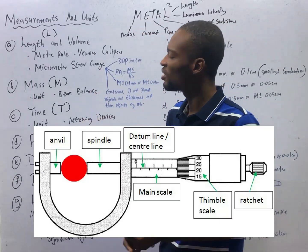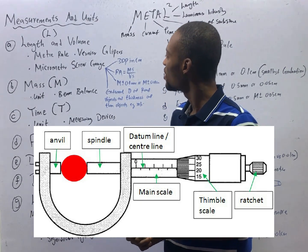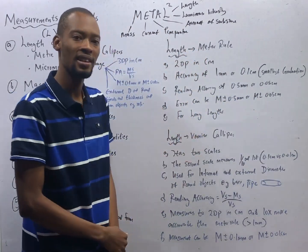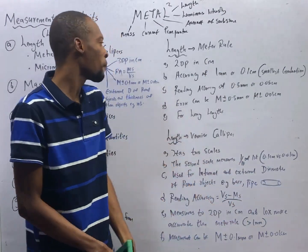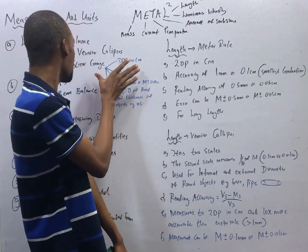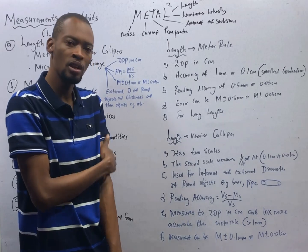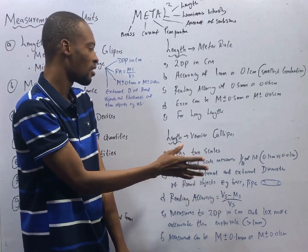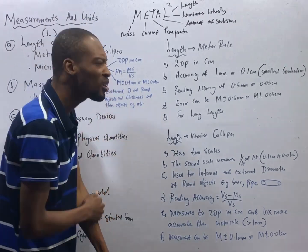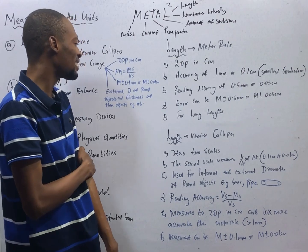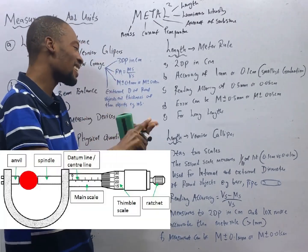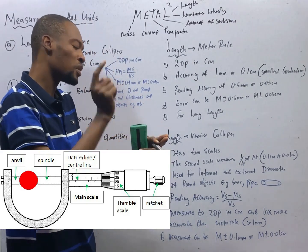The micrometer screw gauge is also an instrument used for measuring length. It measures to three decimal places in centimeter — this is what differentiates it from the meter rule and the vernier caliper, which both measure to two decimal places. The reading accuracy of the micrometer screw gauge uses the main scale divided by the vernier scale reading. It is used to measure the external diameter of round objects and the thickness of thin objects like a small rod.